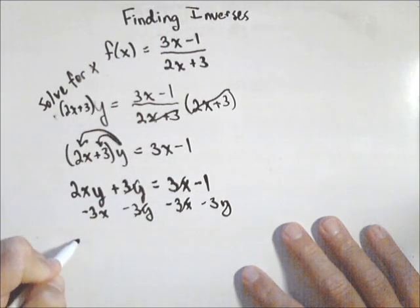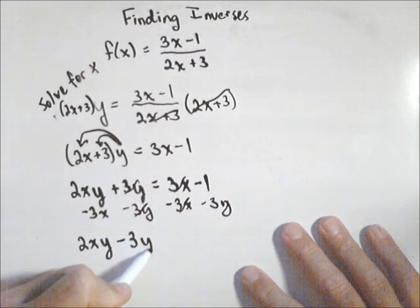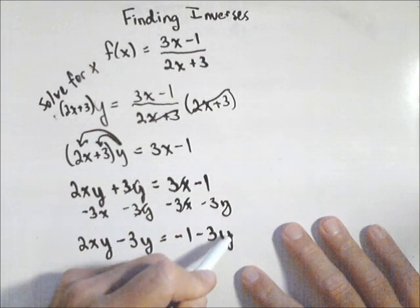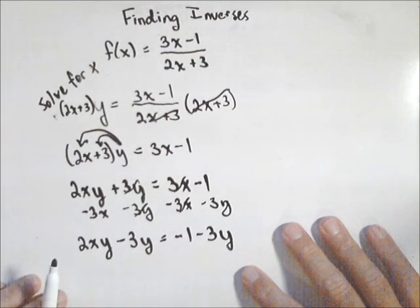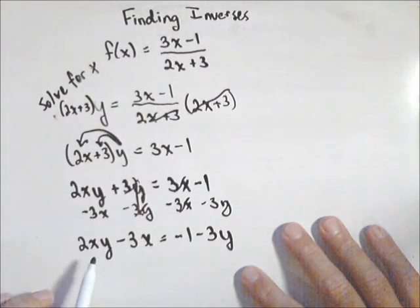So I have 2xy minus 3y equals negative 1 minus 3y. The reason we did that—sorry, minus 3x—excuse me, we have 2xy minus 3x. Our 3y's cancelled.